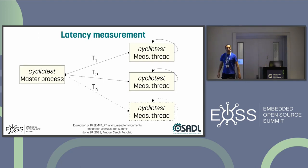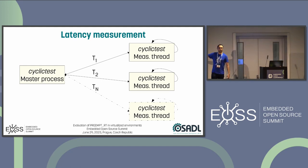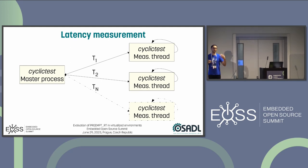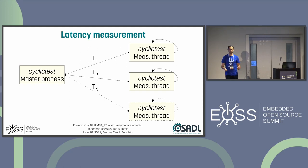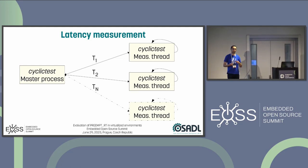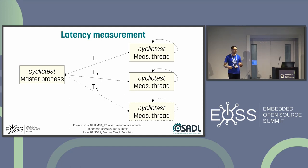Cyclic test is a tool that lets you start a given number of threads that wake up at a given interval — say, 200 microseconds. Every time one of these measurement threads wakes up, it takes the current system time and compares it to the expected wake-up time, calculates the delta, and you get the wake-up latency. This latency is continuously reported to a master process that monitors the worst-case latency and can create a histogram.